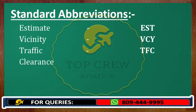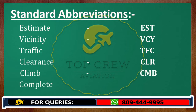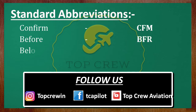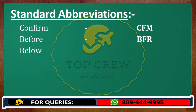Clearance — CLR. Climb — CMB. Complete — CMPL. Confirm — CFM. Before — BFR. Below — BLW. Between — BTN. Procedure Turn — PTN.